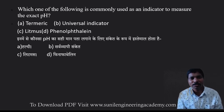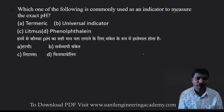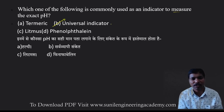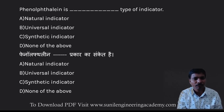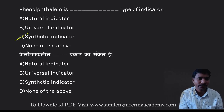Which one of the following is commonly used as an indicator to measure the exact pH? For exact pH measurement you use the universal indicator — I have covered this in detail in the theory session, you can watch that. Phenolphthalein is a synthetic type of indicator.